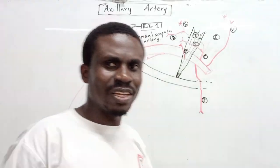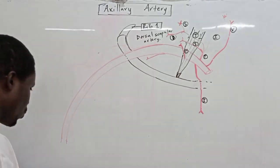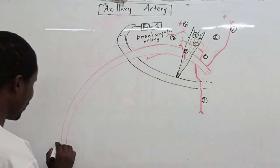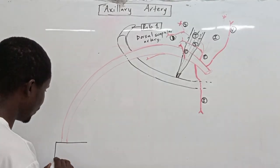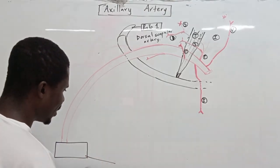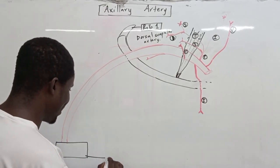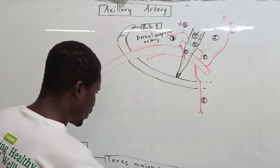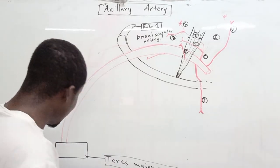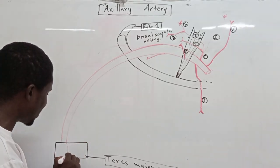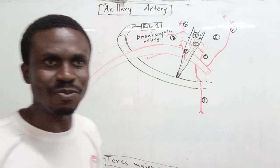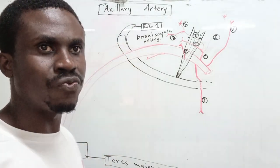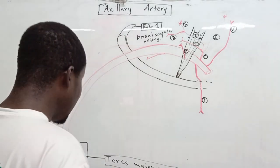The axillary artery ends at the lower border of the teres major muscle, which is one of the muscles forming the medial border of the bicipital groove. So the axillary artery extends from the outer border of the first rib to the lower border of the teres major muscle.